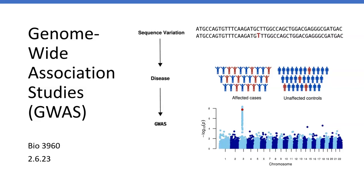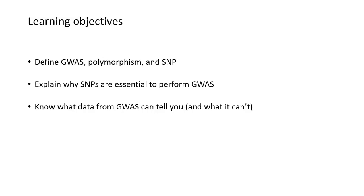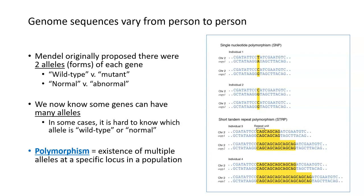This is a lecture on genome-wide association studies, or GWAS. In order to understand GWAS, we're going to have to understand a couple of terms including polymorphism and SNP, and then we're going to talk about why SNPs are essential to do a genome-wide association study and what kind of things you can learn from a GWAS — and some of the things that you can't.